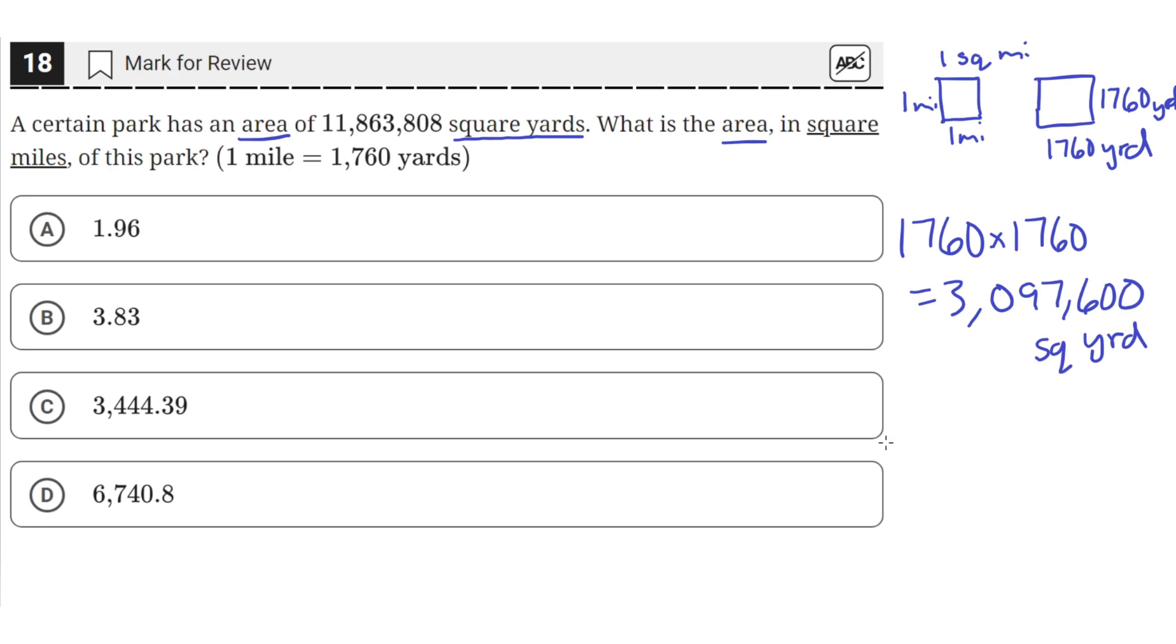So that's equal to one square mile. And since we're given that 11,863,808 square yards is the area, if we multiply that with one square mile divided by 3,097,600 square yards, then the square yards here will cancel out, and we'll be left with units of square miles. So when we divide 11,863,808 by the number of square yards in one mile, we'll get a value of 3.83. So this will equal 3.83.